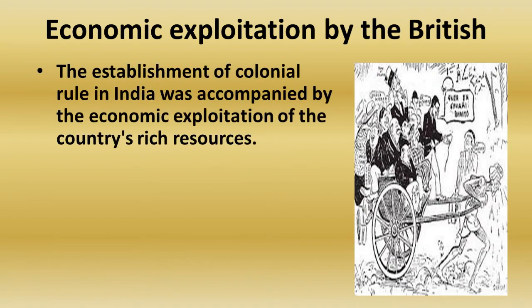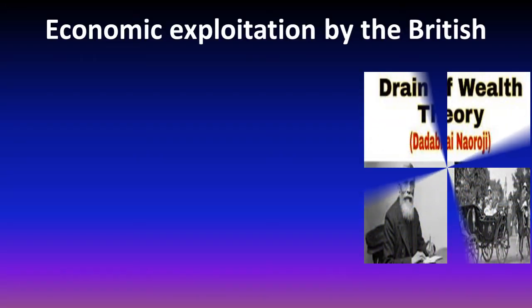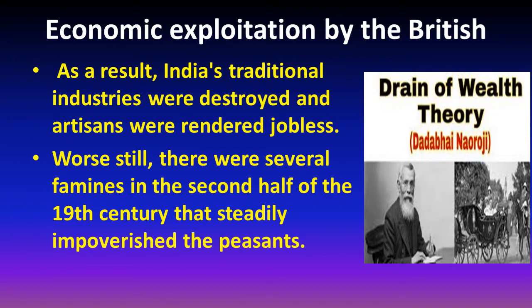Economic exploitation by the British. The establishment of colonial rule in India was accompanied by the economic exploitation of the country's rich resources. The systematic transfer of wealth from India to England through various fields was explained by our great leader Dadabhai Naoroji as the drain of wealth. As a result of economic exploitation by the British, India's traditional industries were destroyed and most workers lost their jobs. Several famines in the second half of the 19th century also led to the peasants becoming poorer.